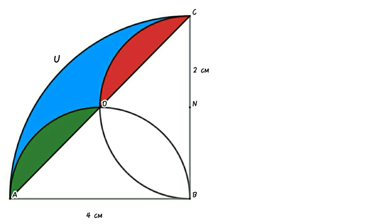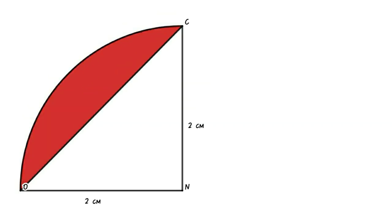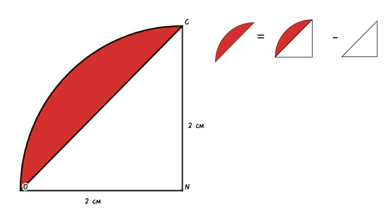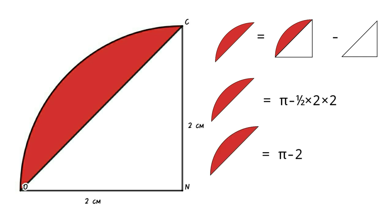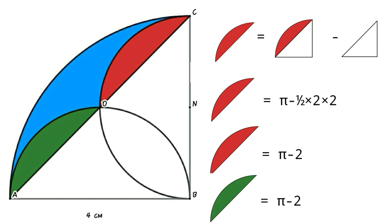Now find the area of the red and green segments. From the figure, area of red segment equals area of green segment. Connect O and N, where O is the meeting point of the semicircles and N is the center of one semicircle. Area of red segment equals area of quarter circle minus area of triangle ONC, which equals π − (1/2)(2)(2) = π − 2. So area of green segment also equals π − 2.